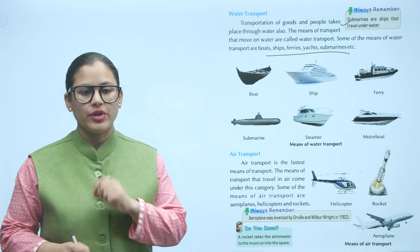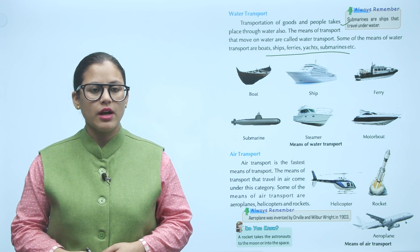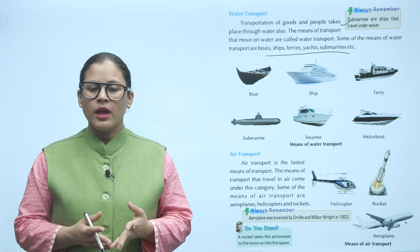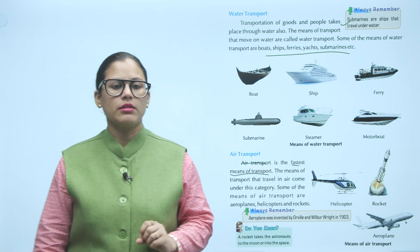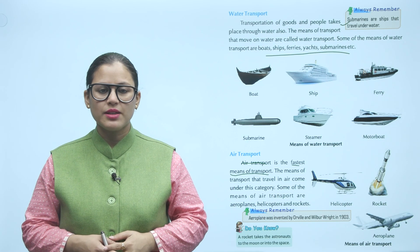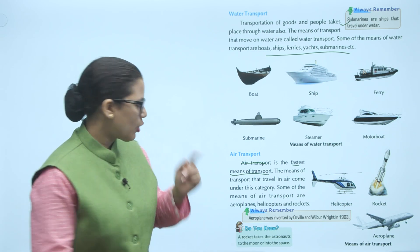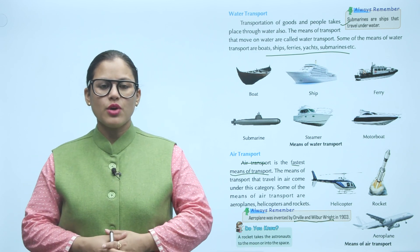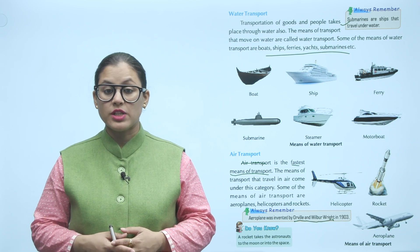Air transport is the fastest means of transport. The means of transport that travel in air come under this category. Some of the means of air transport are aeroplanes, helicopters, and rockets. Always remember: the aeroplane was invented by Orville and Wilbur Wright in 1903. Do you know a rocket takes astronauts to the moon or into space?